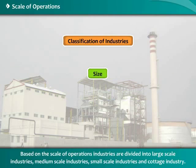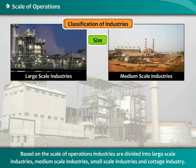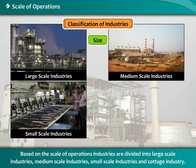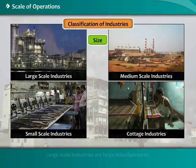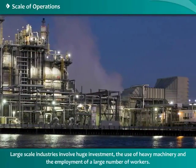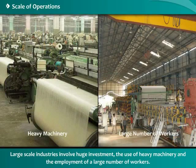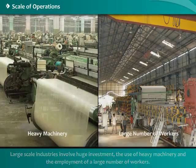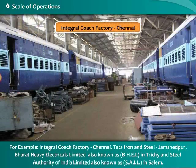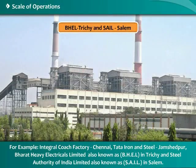Based on the scale of operations, industries are divided into large-scale, medium-scale, small-scale industries, and cottage industry. Large-scale industries are large establishments involving huge investment, the use of heavy machinery, and employment of a large number of workers. Examples of large-scale industries include Integral Coach Factory Chennai, Tata Iron and Steel Jamshedpur, and Bharat Heavy Electricals Limited (BHEL) in Trichy.